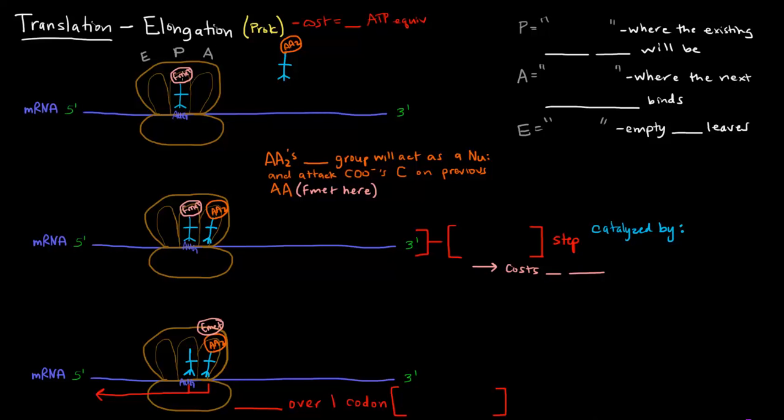It's specifically in the P site. There are three sites of the ribosome: the A site, the P site, and the E site. Before going on, we must talk about what each of those are.